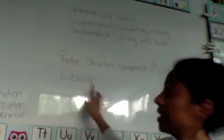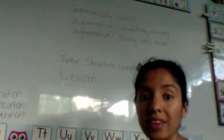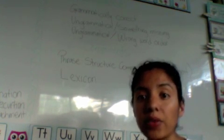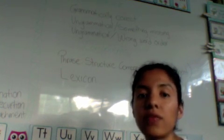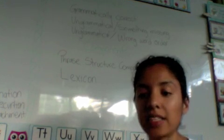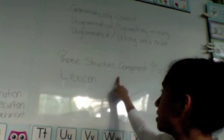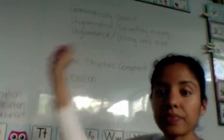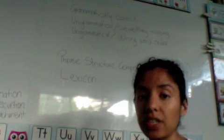Now the lexicon, this one interacts with the phrase structure component and contains information about the lexemes of a language. This includes the phonological, morphological, syntactic, and semantic aspects. So together, the phrase structure component and the lexicon, they constitute the core of any modern generative grammar.